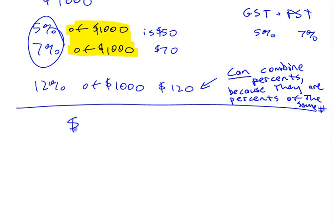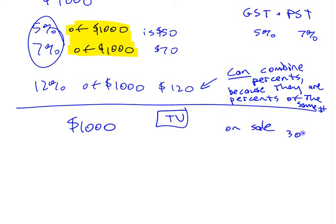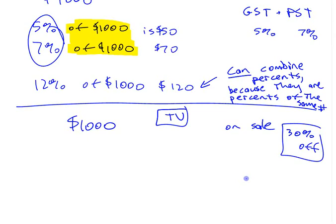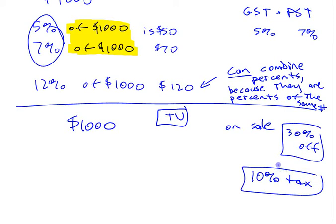If you have a situation where you have that same $1,000 TV and it's on sale — let's say 30% off — but there is also 10% tax, can you combine those two percentages together? That's one of the big questions in this section: when can you combine percents and when can't you?